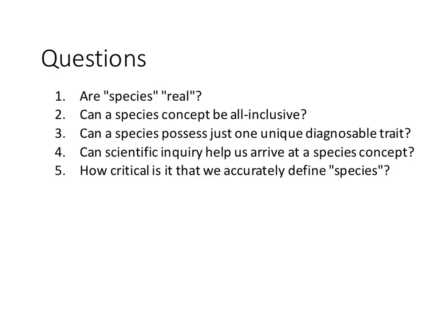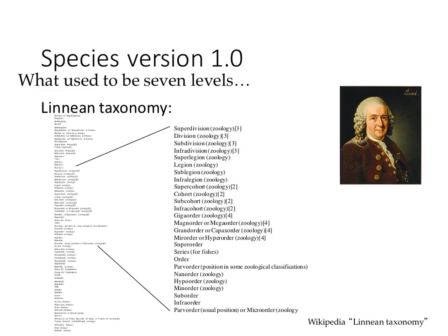This is my own personal perspective on the issue. We used to have—we still do—Linnaean classification: kingdom, phylum, class, order, family, genus, species. That's pretty easy: seven different levels of taxonomy.